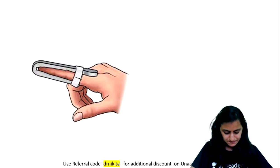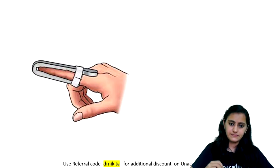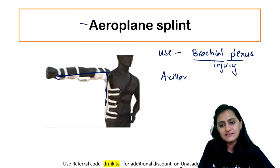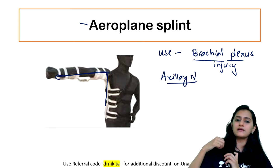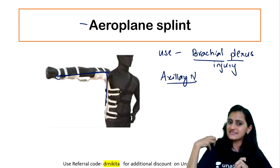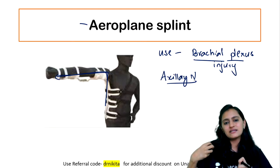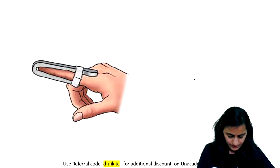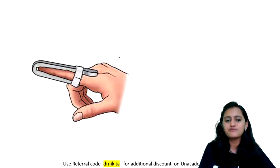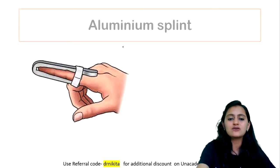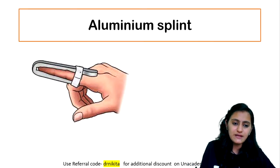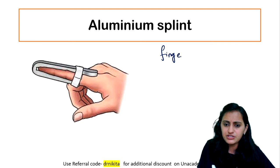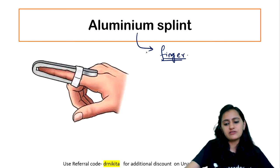Next one. This is the aluminium splint — also called mallet finger splint — used for finger pathologies. You can see the splint is made of aluminium. It is basically used in phalangeal fracture and other finger pathologies. So aluminium splint is used in finger pathologies.